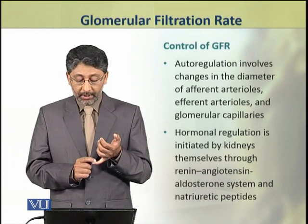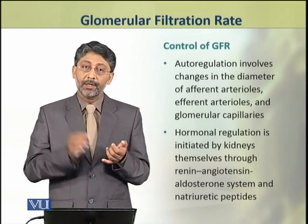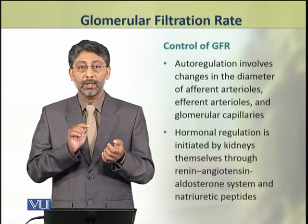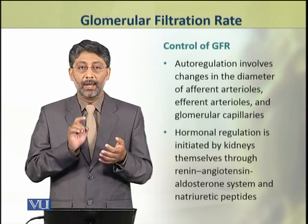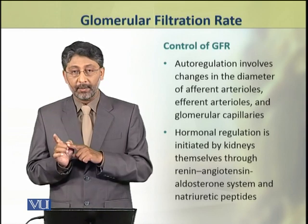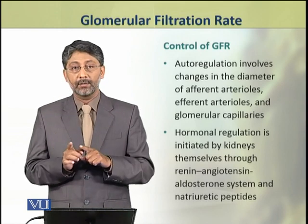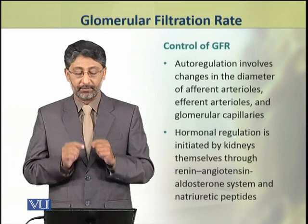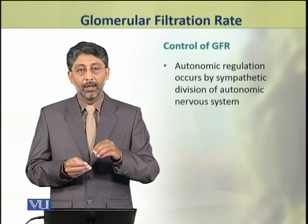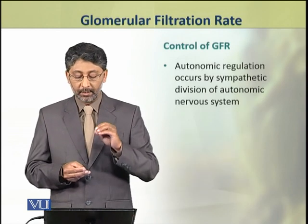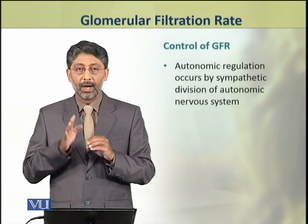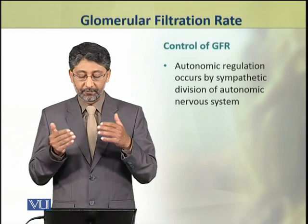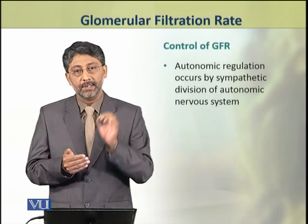Hormonal regulation is initiated by the kidneys themselves through the renin-angiotensin-aldosterone system and atrial natriuretic peptides. The autonomic regulation occurs by the sympathetic division of the autonomic nervous system.